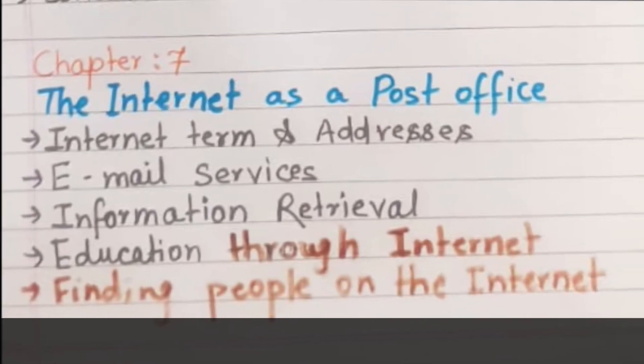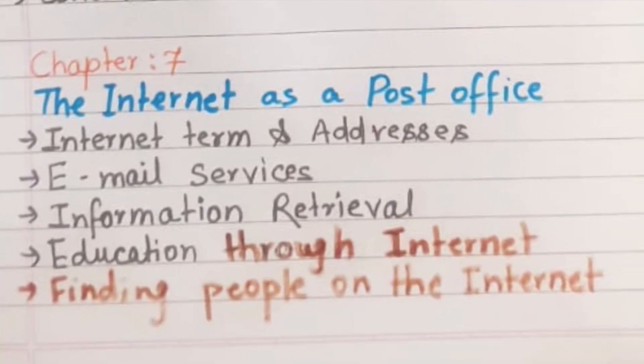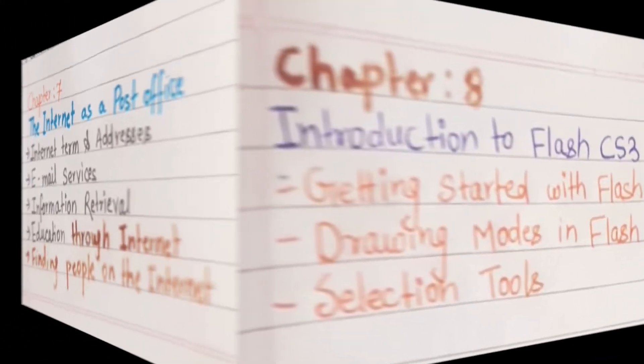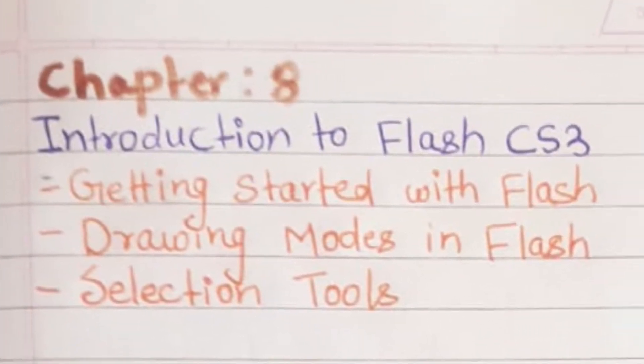Chapter 7 is very interesting — it is called Internet as a Post Office. Topics include Internet Terms and Addresses, Email Services, Information Retrieval, Education Through Internet, and Finding People on the Internet.